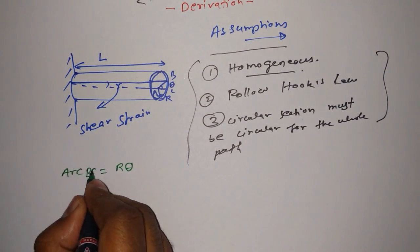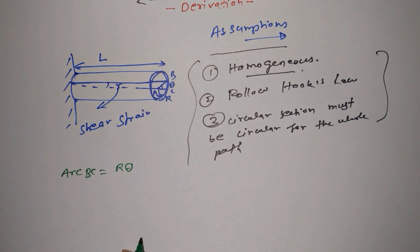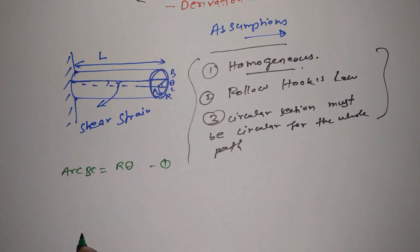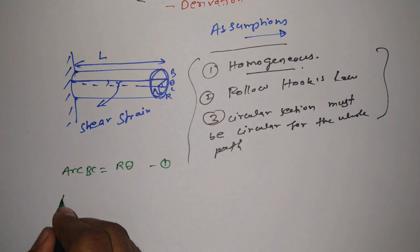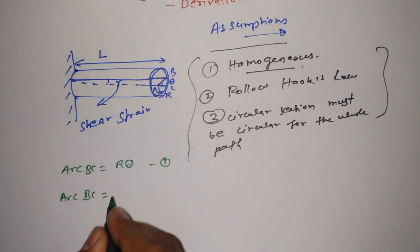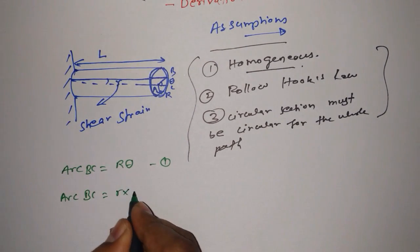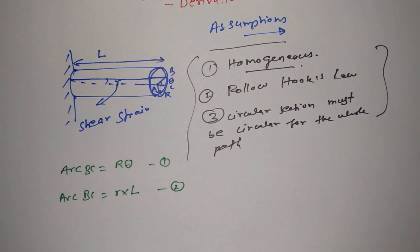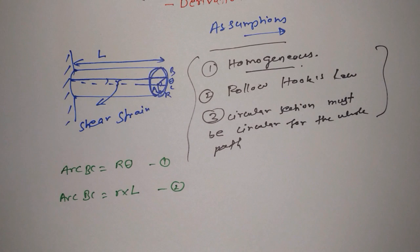The arc BC is equal to R times theta. This is the first equation. Again, arc BC is also equal to shear strain gamma multiplied by L. This is the second equation.